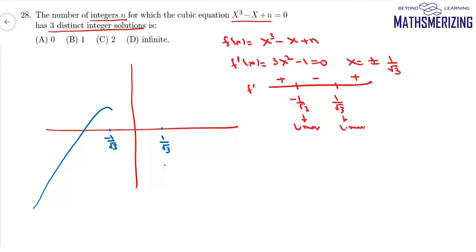Now it says this equation has three distinct integral solutions. So that means the only integral solution possible between -1/√3 and +1/√3 is 0. So this graph must pass through x equal to 0.